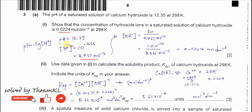Now we use the Kw expression: Kw equals the concentration of hydrogen ion times the concentration of hydroxide. Rearranging, the concentration of hydroxide equals Kw divided by [H⁺], which gives 0.0224 mol per dm³.